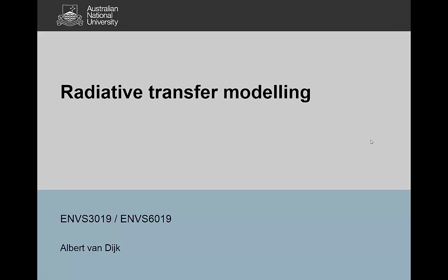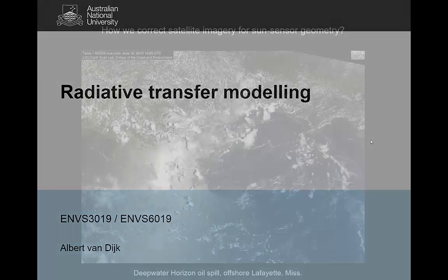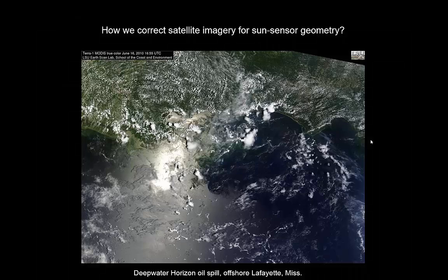Hi, this is Albert van Naik and in this video I want to talk about radiative transfer modeling. Radiative transfer modeling is one of the ways in which we can turn the reflectances that we measure from the surface by the satellite into real properties, real characteristics of the surface or of the objects that we're looking at. So it's a pretty important aspect of remote sensing.